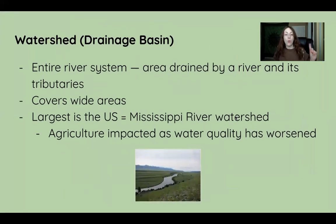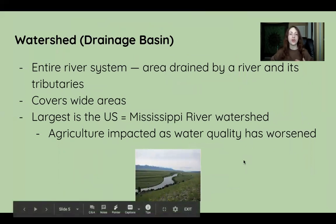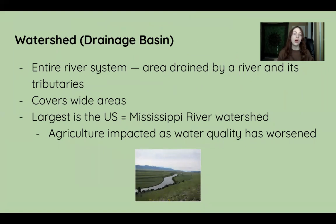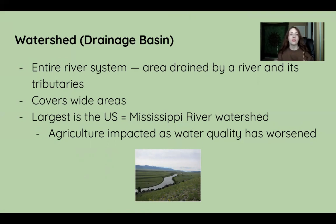Next is the watershed, also commonly referred to as a drainage basin. It's basically an entire river system — an area drained by a river and its tributaries — and it covers wide areas. The largest in the United States is the Mississippi River watershed, which is also believed to be the fourth largest in the world. Agriculture has impacted watersheds because, as farming has expanded to provide more food, water quality has worsened. For example, fertilizers used to enrich soil can run off into the water and contaminate it.